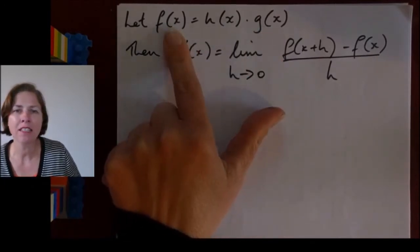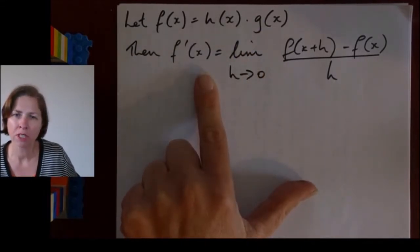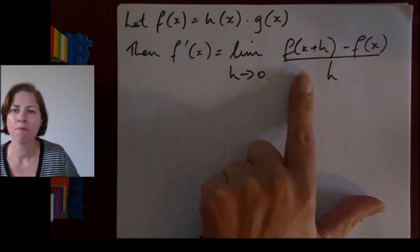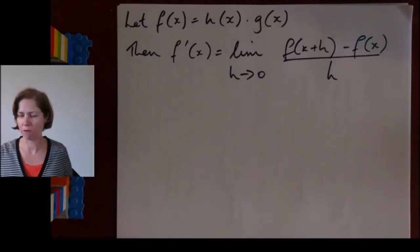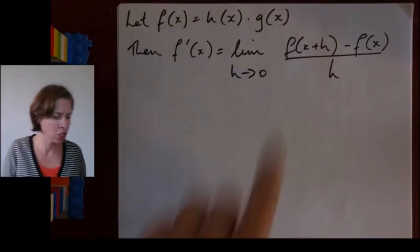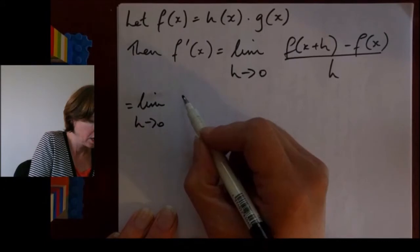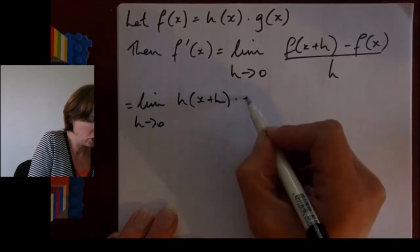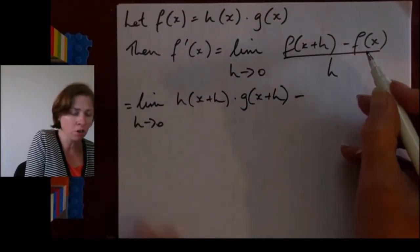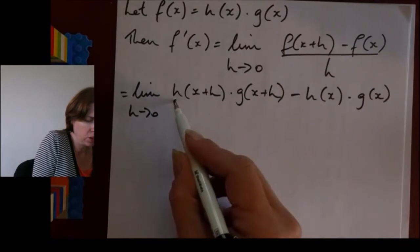I've defined f(x) as the product function h(x) times g(x). Now I'm going to find the derivative using first principles, where f'(x) equals the limit as h approaches zero of [f(x+h) minus f(x)] over h. Substituting, f(x+h) is h(x+h) times g(x+h), so I've got the limit as h approaches zero of h(x+h)·g(x+h) minus h(x)·g(x), all over h.